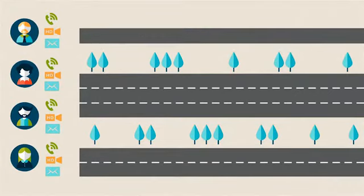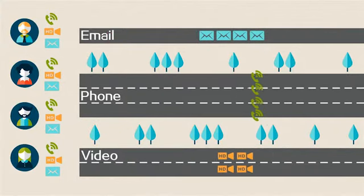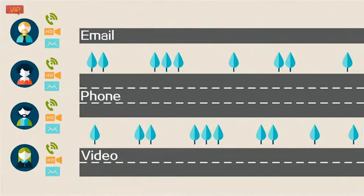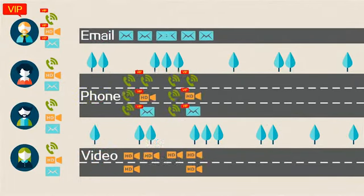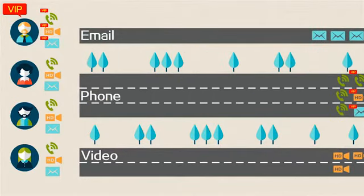Traditional QoS technology identifies packet priorities based on service types, while Hierarchical QoS schedules packets on a per-user, per-service basis.